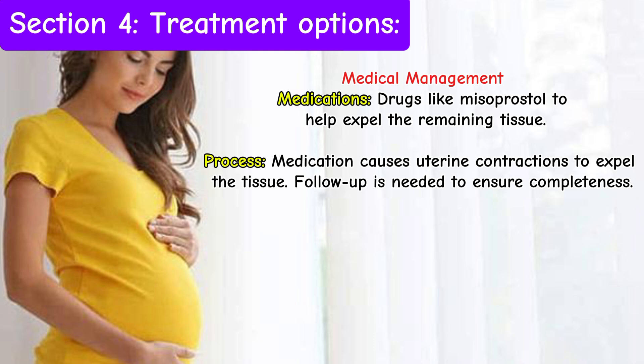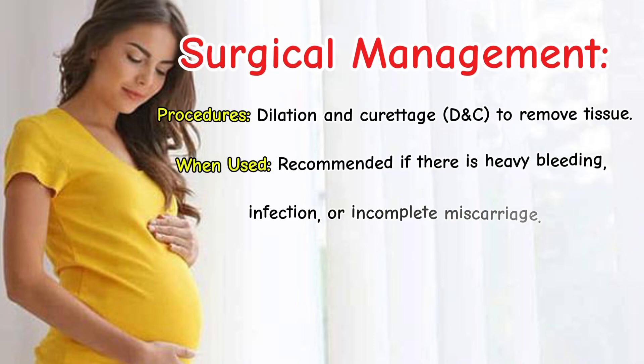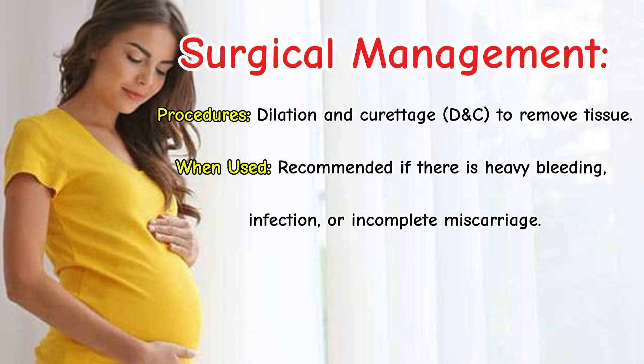Medication causes uterine contractions to expel the tissue, and follow-up is needed to ensure completeness. Surgical management involves a procedure — Dilation and Curettage (D&C) — to remove tissue, and is recommended if there is heavy bleeding, infection, or incomplete miscarriage.